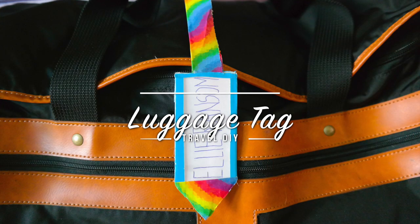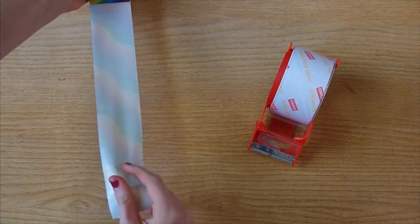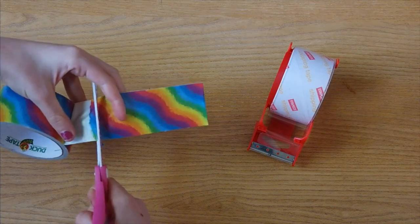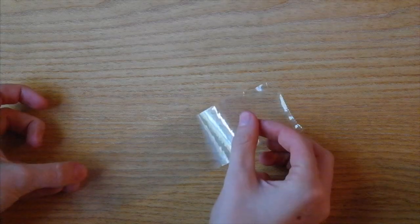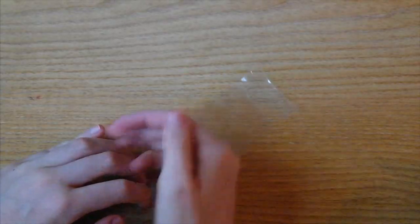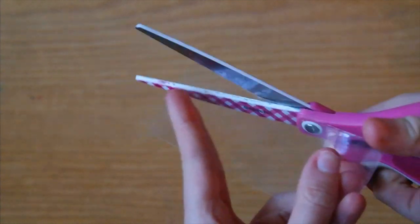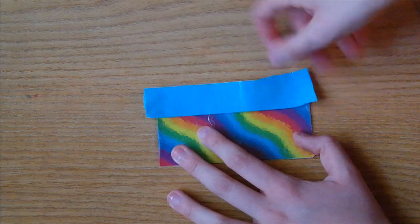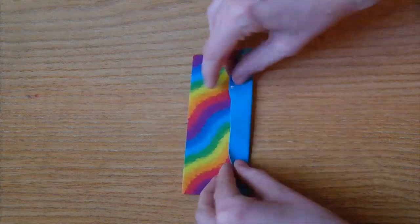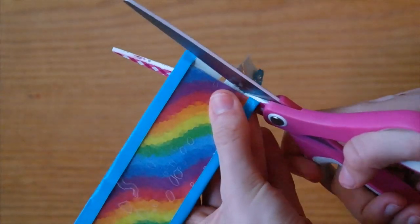The next DIY is this duct tape luggage tag. Take a long strip of duct tape and fold it in half with the sticky sides facing each other. Cut it off. Using clear packing tape do the same thing, so I took two pieces of tape and stuck them together. Trim any parts where your sticky area is sticking out. Lay your clear tape on top of your duct tape and using another piece of duct tape stick those together, making sure the clear tape is showing as much as possible. Trim off any excess tape.